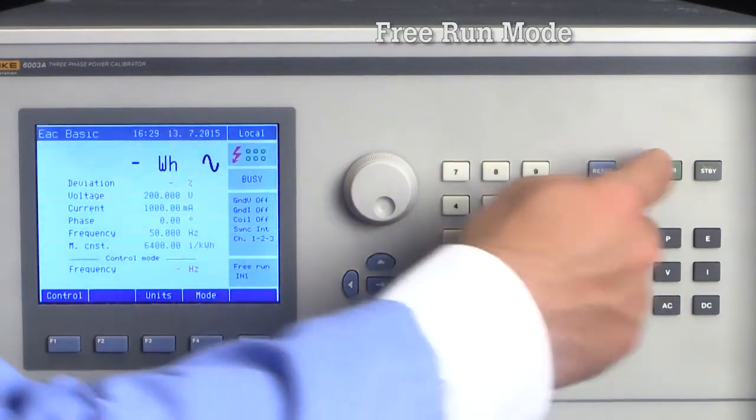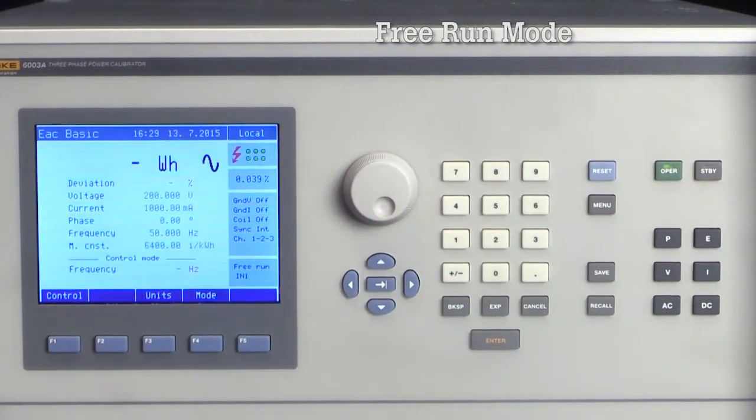I need to set the meter constant or frequency to match the meter's pulse output, which for this meter is 6400 pulses per kilowatt hour. To start the test, I will push operate and the test starts. The 6003A outputs 200 volts, 1 amp into the UUT. In other words, it delivers 200 watts to the meter. The 6003A receives the pulses back from the meter and, based on the meter constant, expects an exact frequency of the pulses.